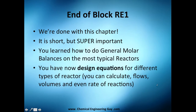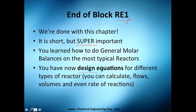This is the end of this block — reactor engineering number one, chapter one in the book. We're done with this chapter. It was short indeed, but it's super important because we learned about rate of reaction, about generation, about the general molar balance equation, and how to apply it on the four reactors we're going to study. You now know, in theory, how to derive and apply those design equations for these different types of reactors, so you can now calculate flows, volumes, and even rate of reaction.